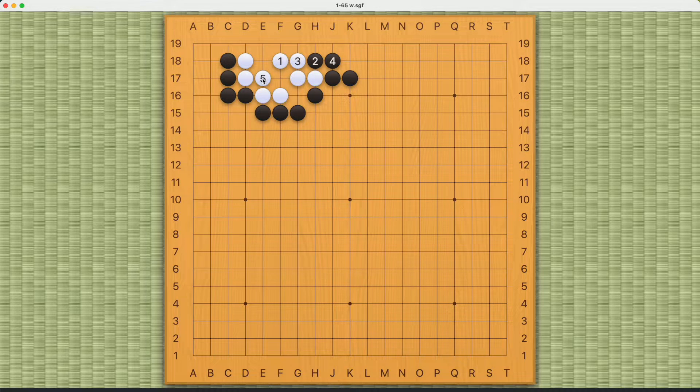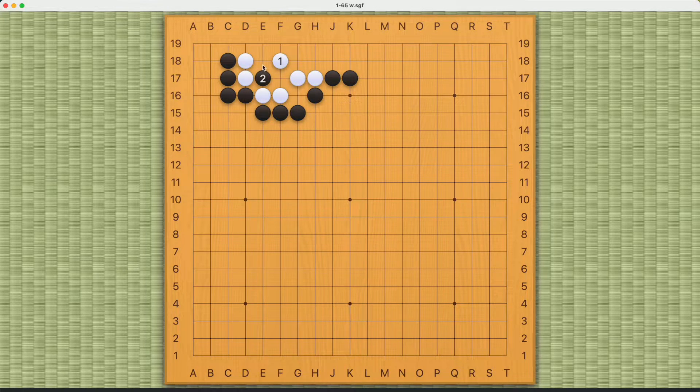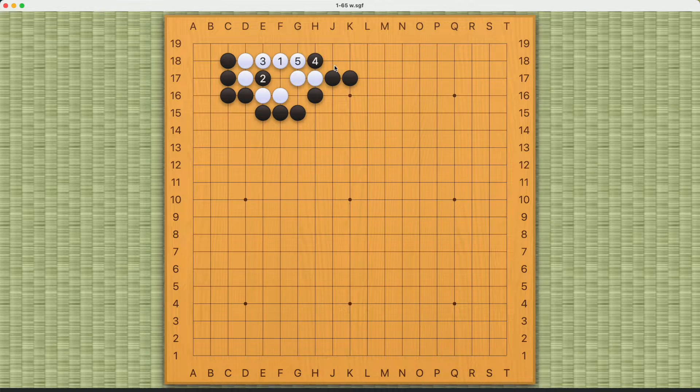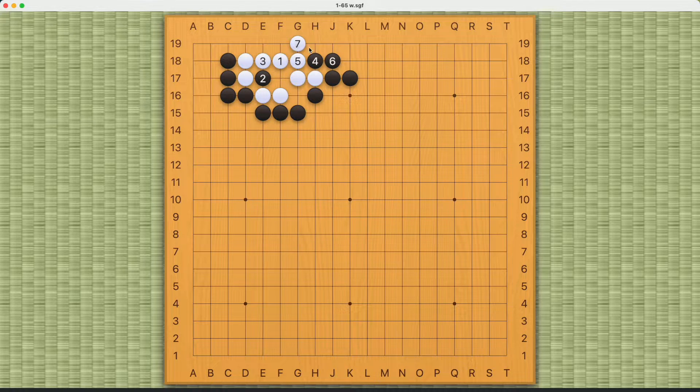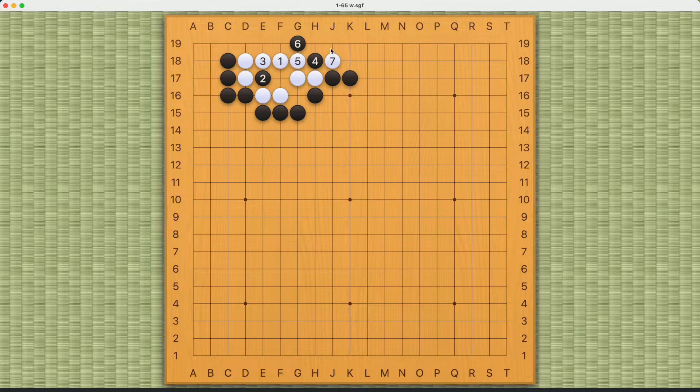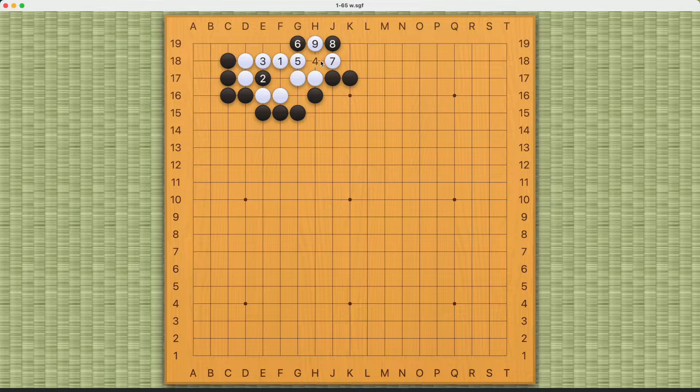If black plays on the inside then there's still enough eye space for white to build an eye. Black can't really start a ko this way - maybe this is a ko that you found, but it doesn't really exist.